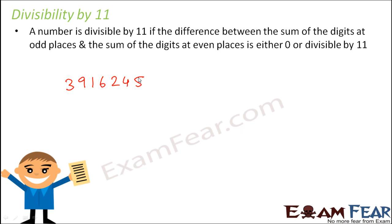What we need to do is sum the digits at the odd places, then sum the digits at the even places, and then find the difference between the two. Now, the question is: what is the meaning of odd places and even places? This counting of odd and even places will always start from the right.